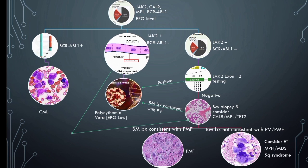JAK2 V617F mutation is present in 40 to 60 percent of patients with essential thrombocythemia and primary myelofibrosis. If JAK2 and BCR-ABL1 are both negative, then consider JAK2 exon 12 mutation testing to diagnose a small percentage of cases of polycythemia vera where JAK2 is negative and exon 12 is positive.